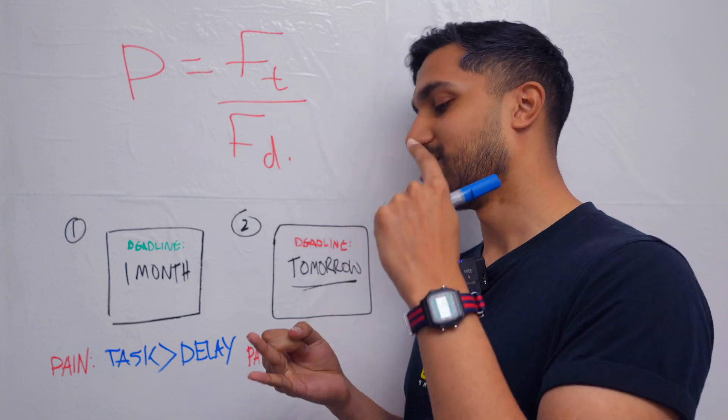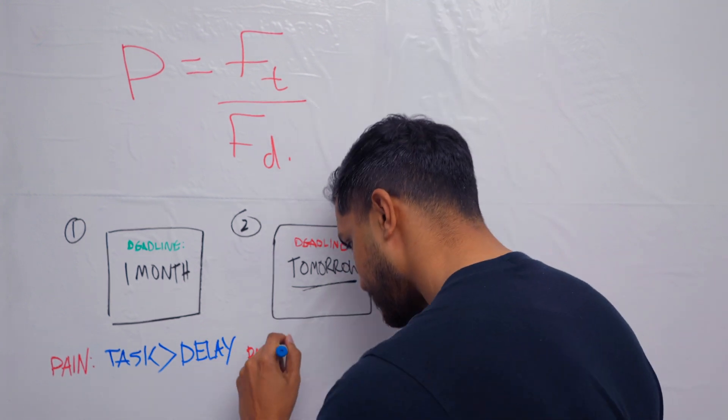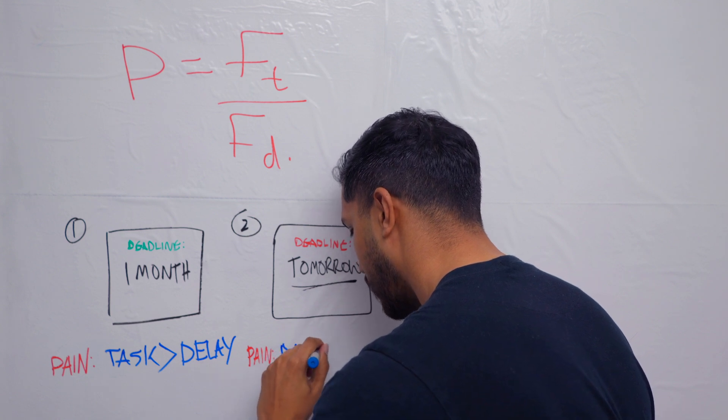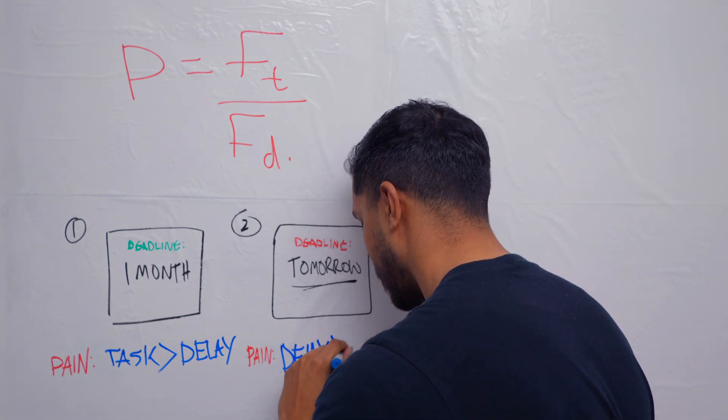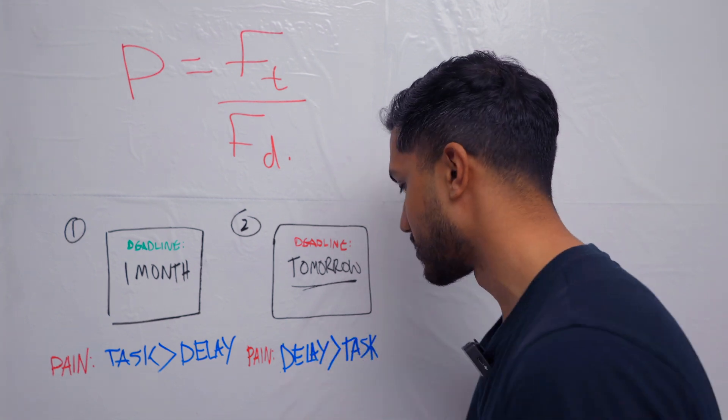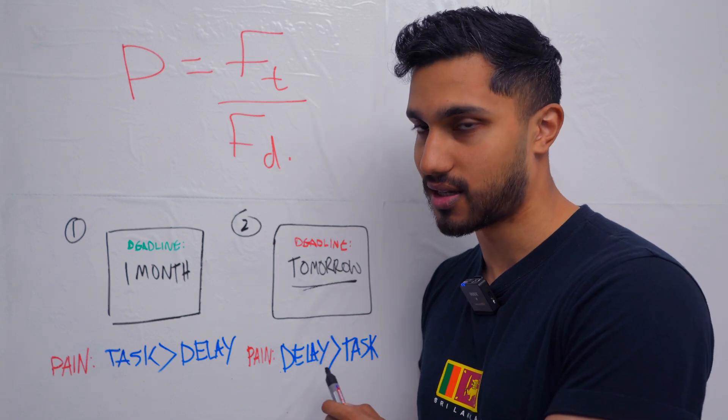you might get fired at your job. And so the pain of the delay is more costly than the issues of the task. So this is the condition for procrastination and this is the condition for getting the work done.